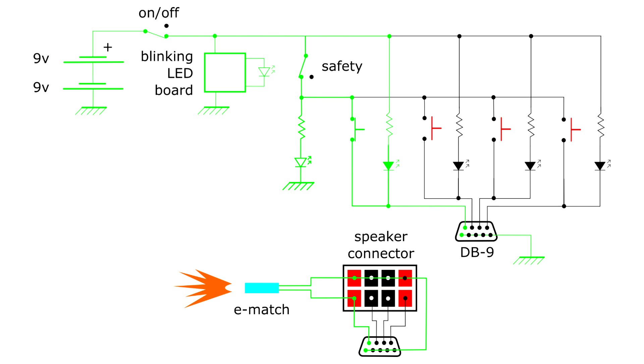When the safety switch is flicked, another LED indicates that the system is armed. When the push button is hit, 18V can pass straight through the match, which instantly ignites it.